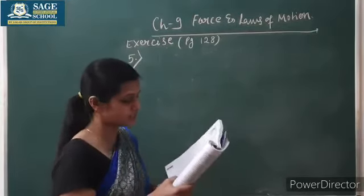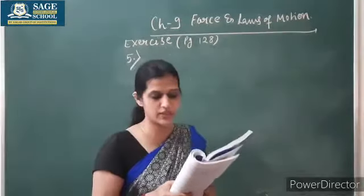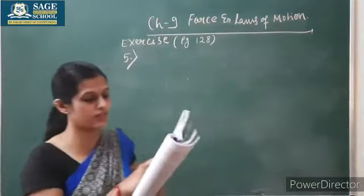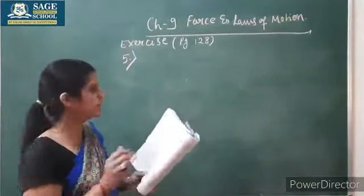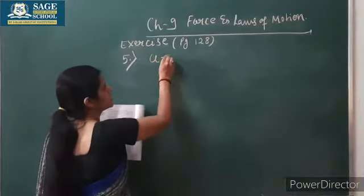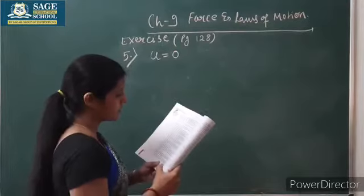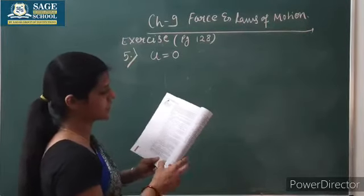I am reading, you try to relate it. A truck starts from rest and rolls down a hill with a constant acceleration. So here the thing is given, a truck starts from rest. It means definitely the initial velocity of the truck is 0, and rolls down a hill with a constant acceleration.